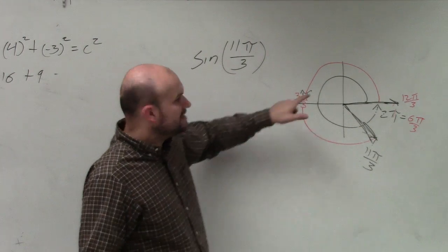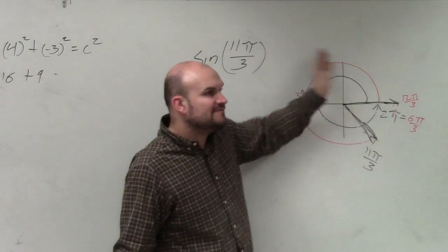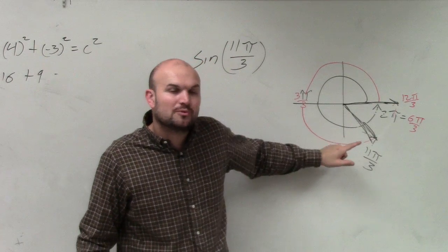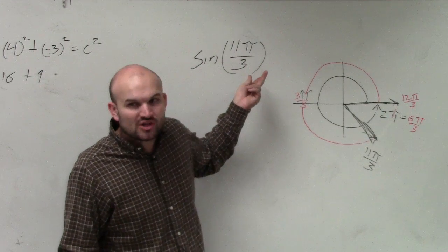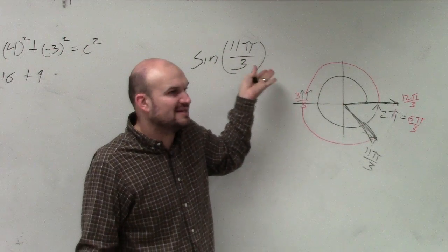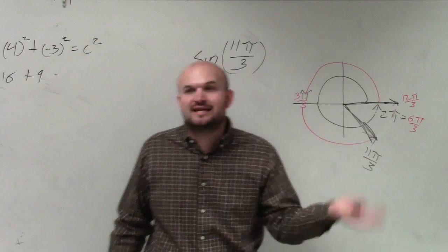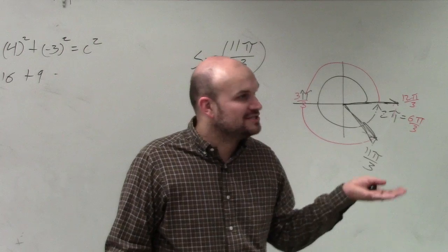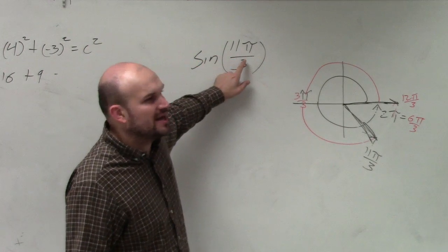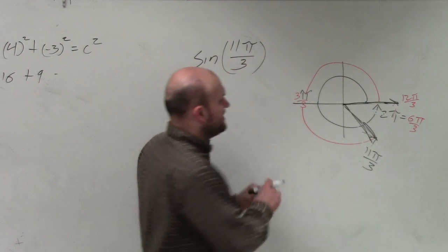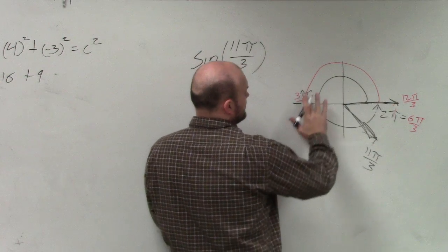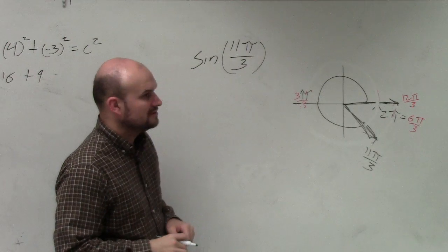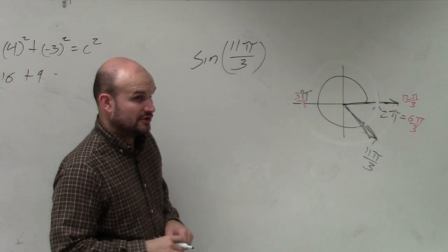There are infinitely many of these angles that have the same initial and terminal side. So what I can do is rewrite this with a smaller angle. How do I find an angle with the same initial and terminal side? I can subtract or add 2 pi. I wouldn't want to add 2 pi — that just makes a bigger angle. But if I subtract 2 pi, that takes me back.